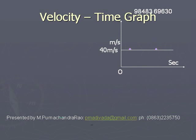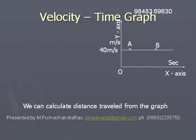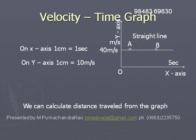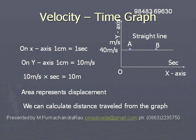From the graph, we can calculate the displacement of the body. On the x-axis, one centimeter represents one second. On the y-axis, one centimeter represents 10 meters per second. Then, 10 meters per second multiplied by one second equals 10 meters. So, the area under the graph represents displacement.